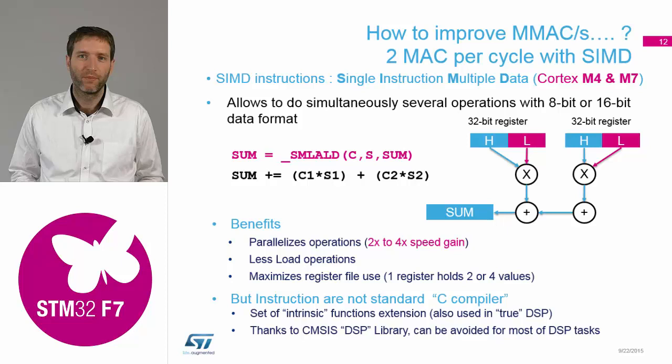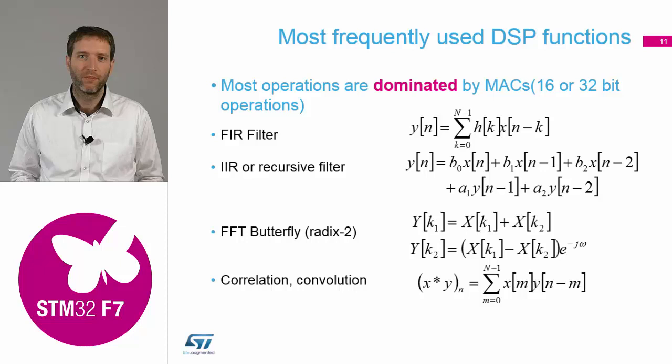What can the STM32 offer to speed up such execution? All these operations are pretty easy to write in C — you can do it with one for-loop, one counter, and indexing two arrays. But it will not be as performant as if you use the techniques I would like to explain.